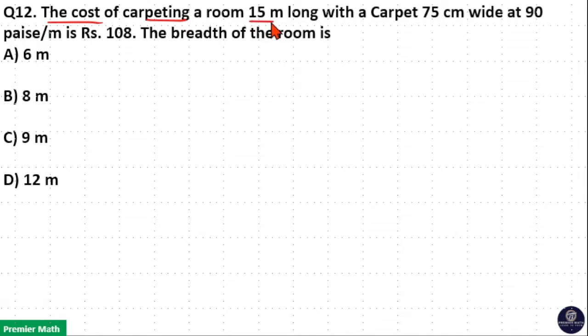The cost of carpeting a room 15 meters long with a carpet 75 centimeters wide at 90 paise per meter is rupees 108. The breadth of the room is?